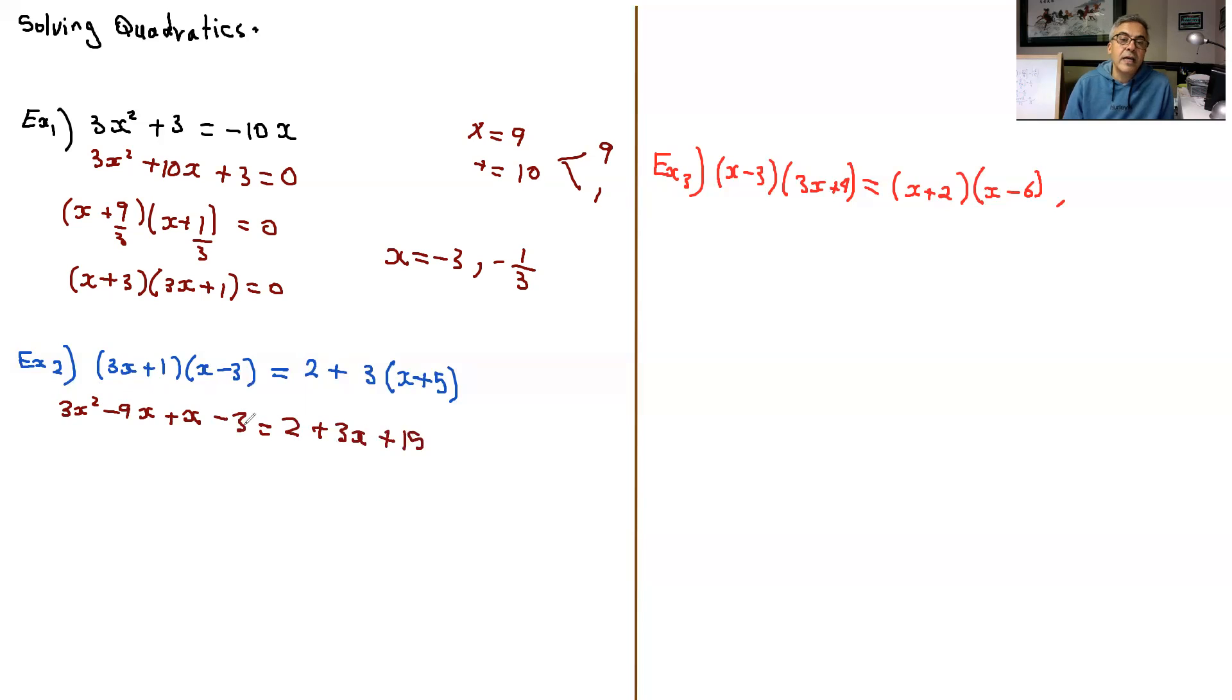At this stage, you have to move everything to one side equated to zero. So we have 3x squared. Negative 9x plus x is negative 8x. And if you move this three to the other side, it becomes minus 11x. You could take your time moving things around. And here we have negative 3 and 2 plus 15 is 17. So negative 3 minus 17 is negative 20 equals zero.